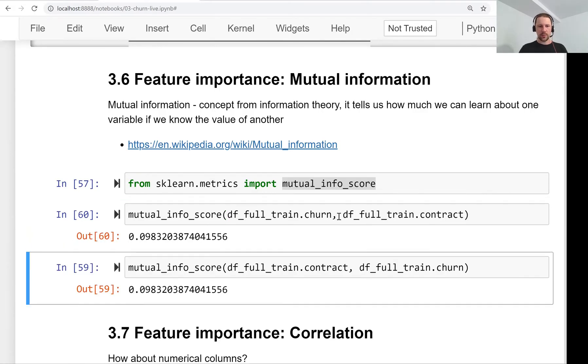It tells us how much we learn about churn by observing the value of a contract variable, and likewise, how much we know about the contract variable by observing the churn.